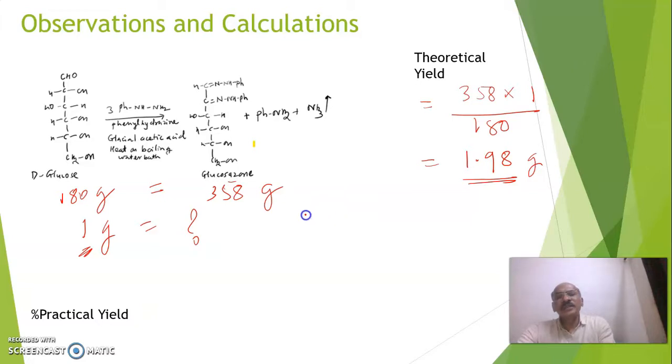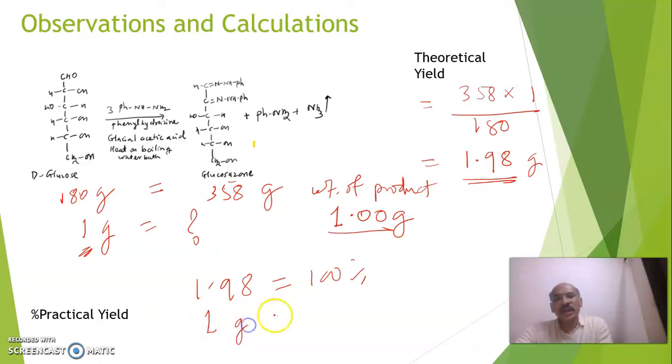Now what is percentage practical yield? Now for this preparation suppose if we have obtained 1 gram of the product - how much product? 1 gram of product we have obtained. That is weight of glucosazone is 1 gram, it is our observation. So if 1.98 gram corresponds to 100% by assuming 100% conversion, but we have obtained only 1 gram, that corresponds to how much? So weight of product, that is 1 multiplied by 100 divided by 1.98, and approximately it will be 50%. Since instead of 2, we got only 1 gram. So like this we have to do calculation for percentage practical yield.